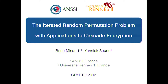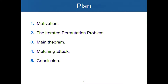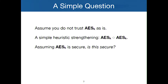Thank you for the introduction. I'm going to talk about the iterated random permutation problem — this is joint work — and there will be a small application to cascade encryption. The general outline of the talk will be pretty much the same as the previous talk. Basically, I'm going to say what the iterative problem is and then solve it, and there will be a main theorem and a matching attack. Let's start with a simple question.